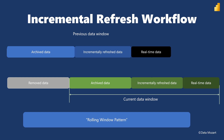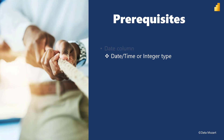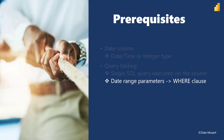To implement Incremental Refresh in your Power BI solution, some prerequisites need to be in place. First, a Date Column: the table must contain a date column, either DateTime or Integer data type, because you need to set parameters for separating data between partitions. Second, Query Folding: that's the ability of Power Query to generate a single SQL query executed on the data source side. Your date range parameters need to be translated to a WHERE clause in SQL to separate data into relevant partitions. Without Query Folding, there is no WHERE clause, no partitioning, and consequently no Incremental Refresh.